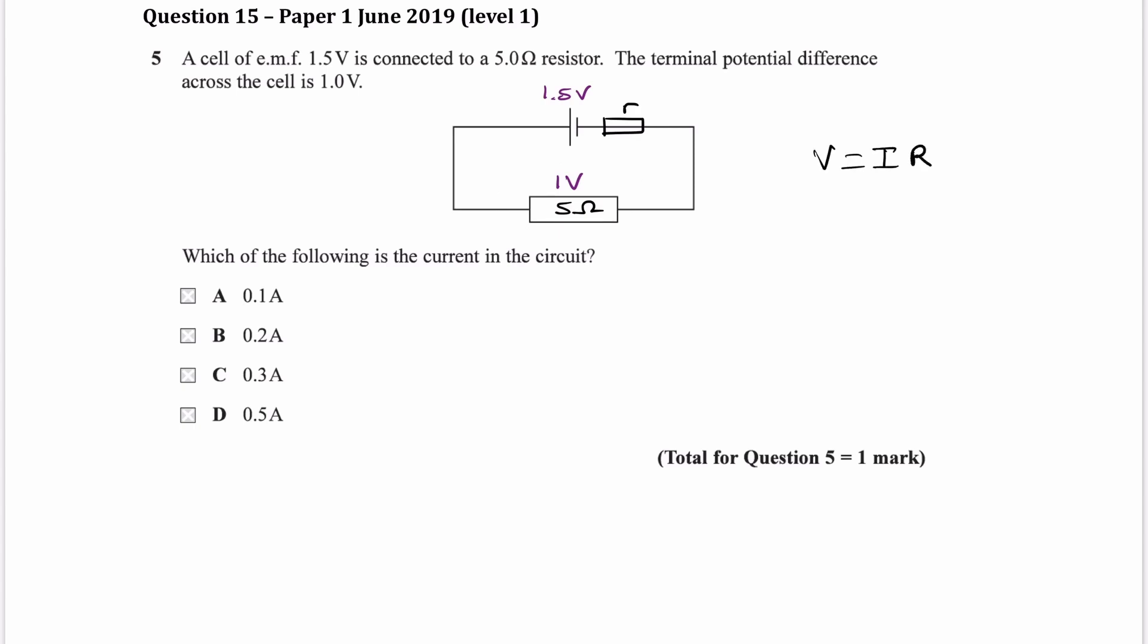V is equal to IR, and the current would then just be V over R, which is 1 volt divided by 5 ohms, which is then 0.2 amps. So that would then be B.